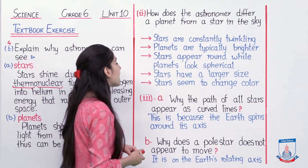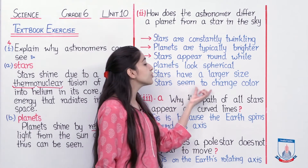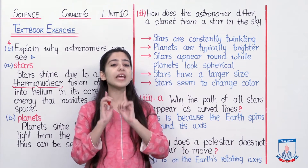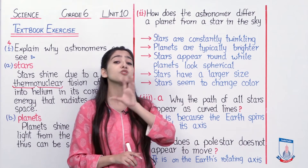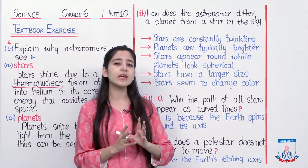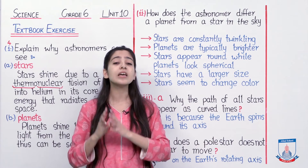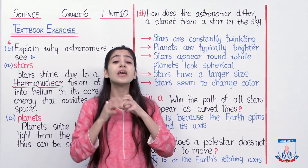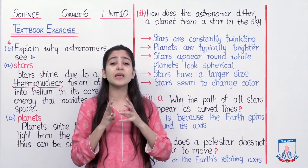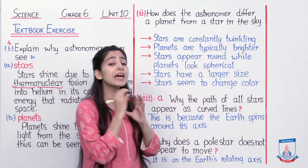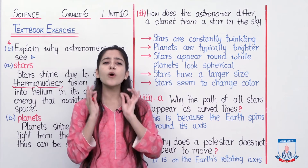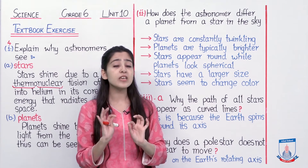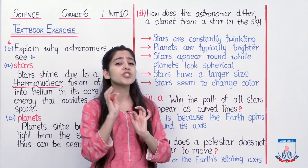Chalte hain last technique ki taraf, that is: stars seem to change color. Agar hum ghor se ek hi star ko dekhte jayein, toh humein pata chalega ke kabhi uska jo color hai, woh bluish ki taraf ja raha hai, aur kabhi uska color bilkul white ja raha hai. Iska matlab ke white aur bluish ke beech mein — crystal white, blue, silver ke beech mein — jo star hai, woh apne colors ko change karta raha. Jabki jo planet hai, woh ek hi color ka rahega, aur woh color bilkul bright white nahi hoga, bilkul ke thoda sa yellowish ki side pe hoga.